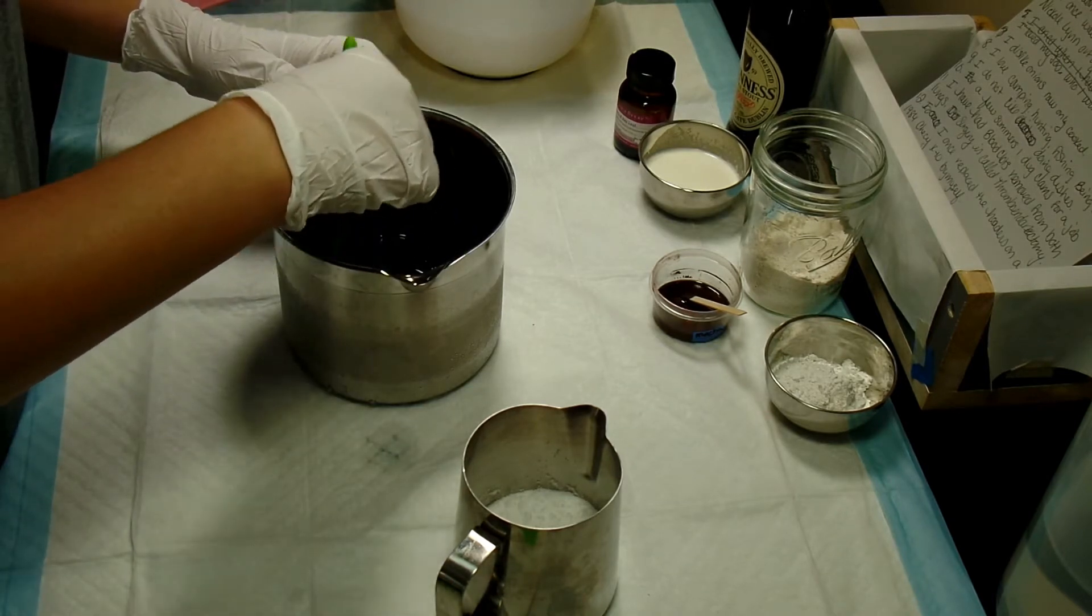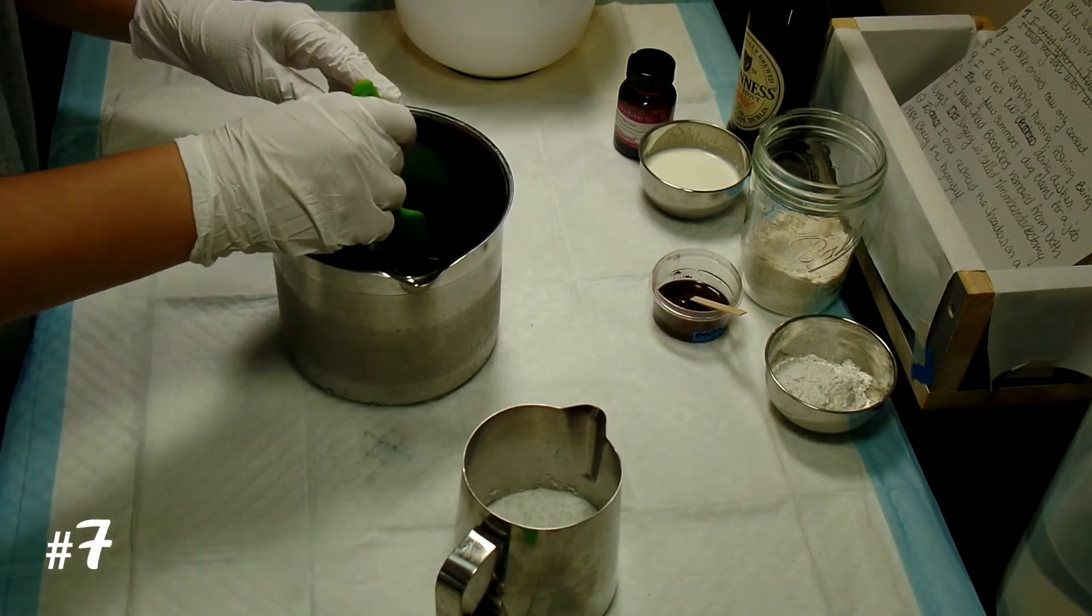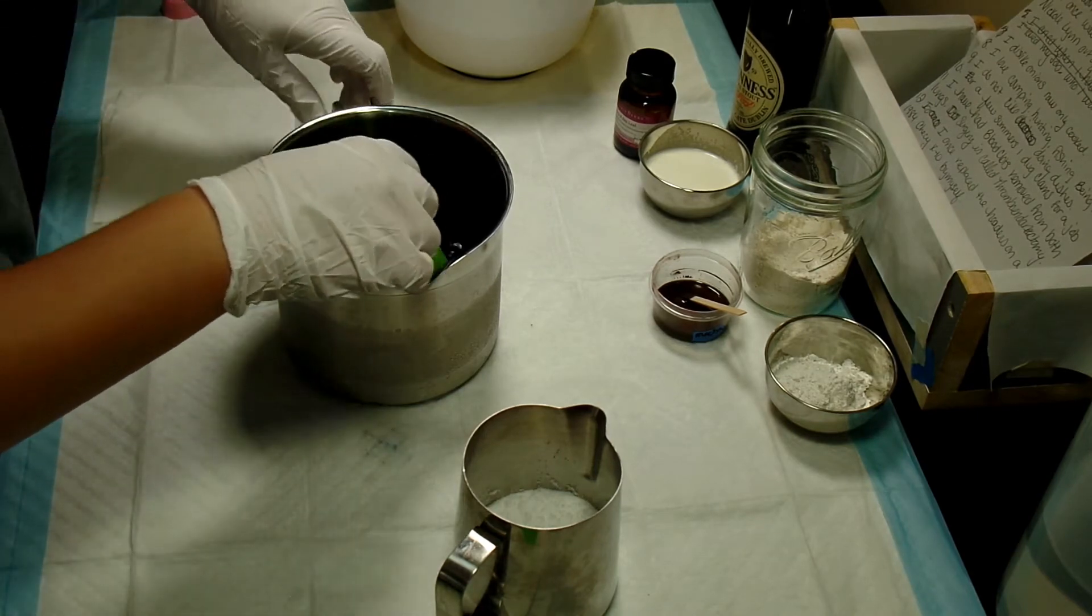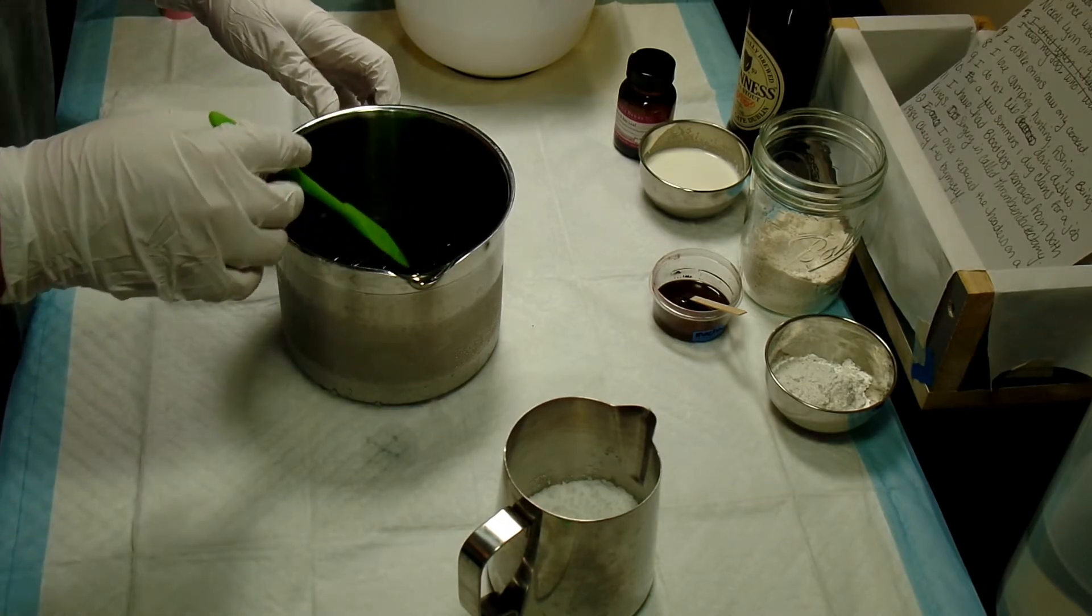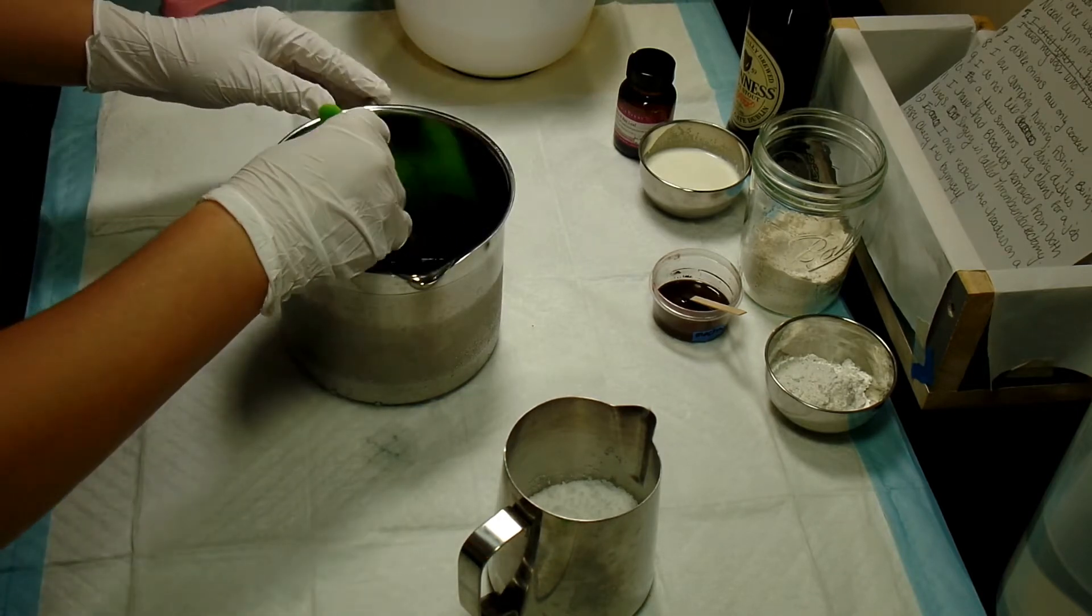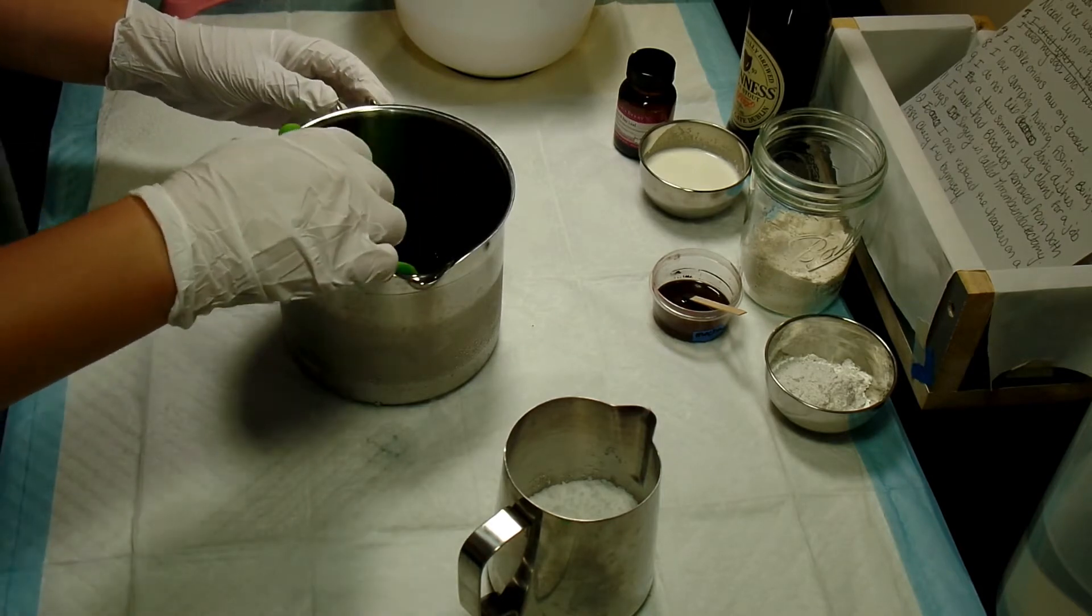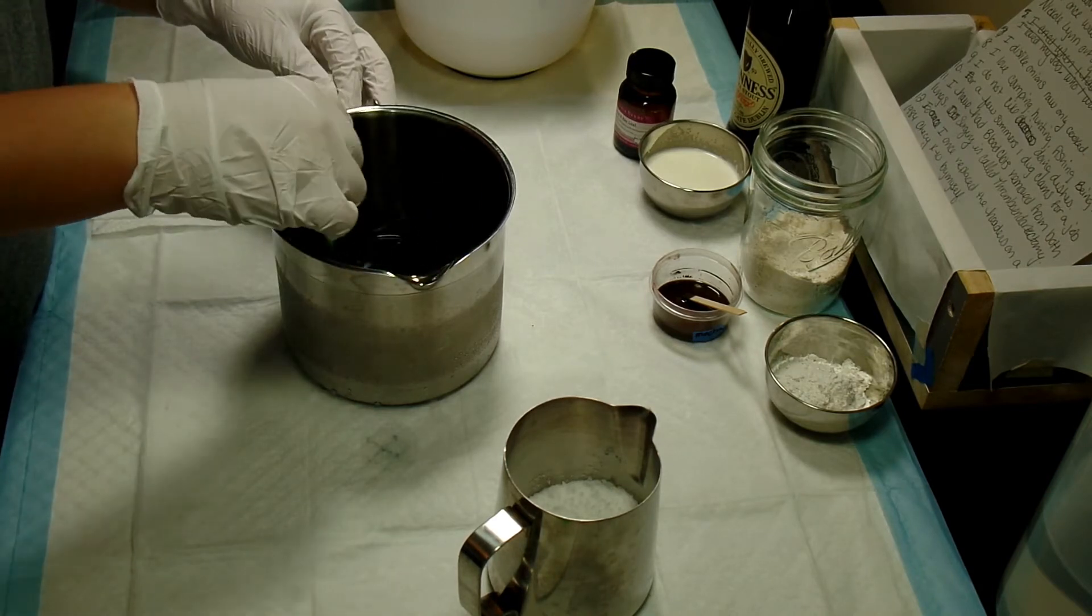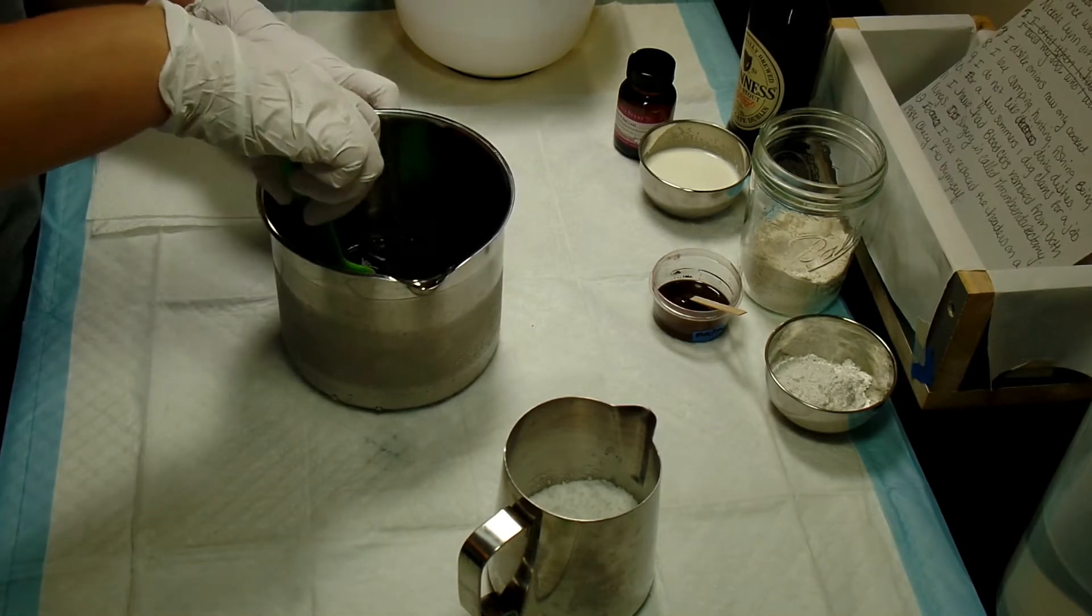I dislike onions - I only like them cooked. Number eight, I love camping, hunting, fishing, being outdoors. Number nine, I do not like doing dishes. For many soap makers, I'm sure this is a common theme. Soap dishes aren't that bad though. I actually have a big bucket in my soap closet that I just put my dishes in and let them actually saponify and then they're much easier to clean.